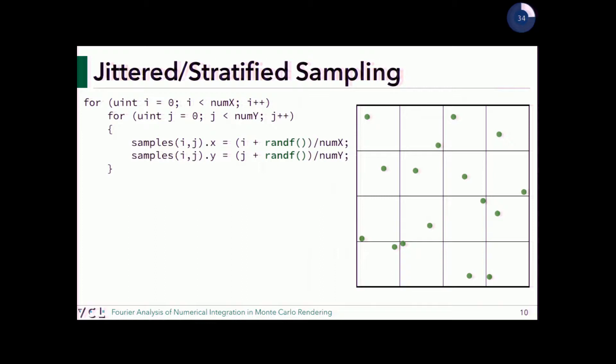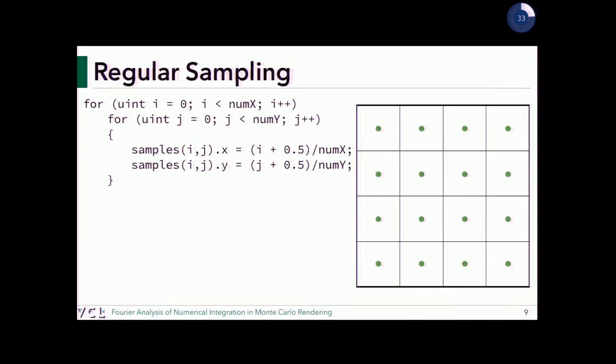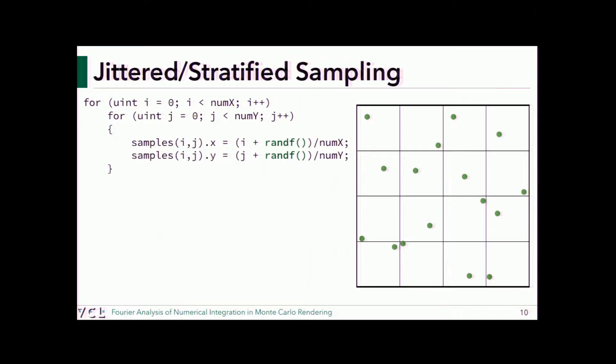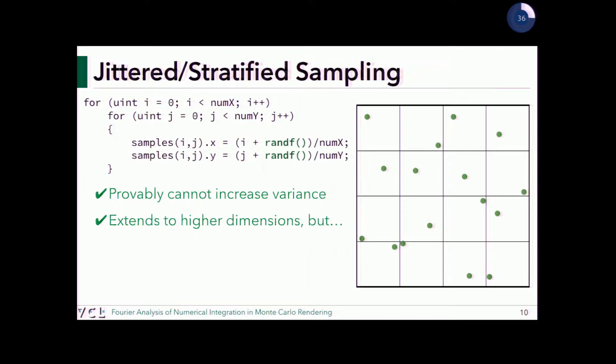Jittered sampling is a straightforward extension: take the regular grid and in each cell push the sample by some random value within the cell. The nice thing about jittered sampling is we can prove it does not increase variance. It extends to higher dimensions, but has the same problem: because of the grid structure you still get the same aliasing issue — though it's slightly better than a pure grid.